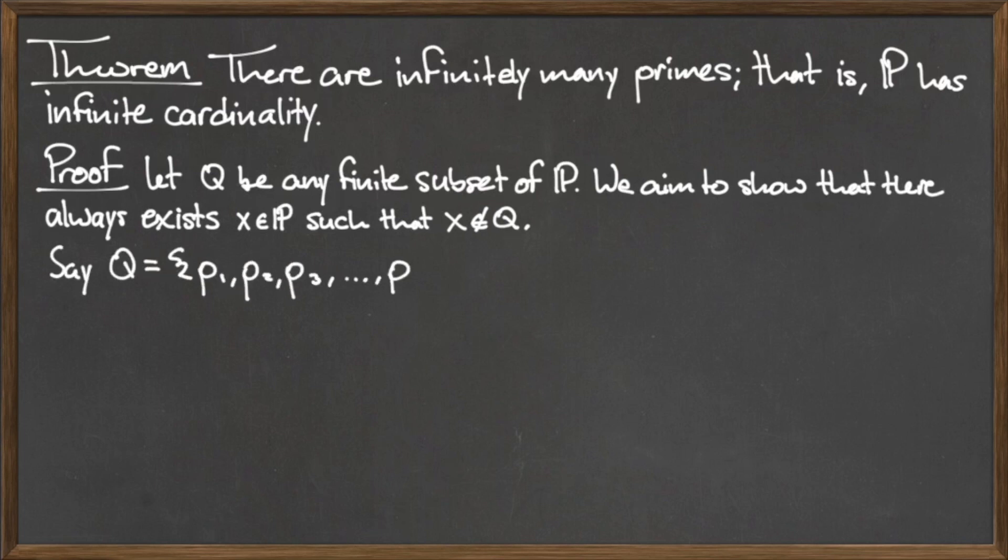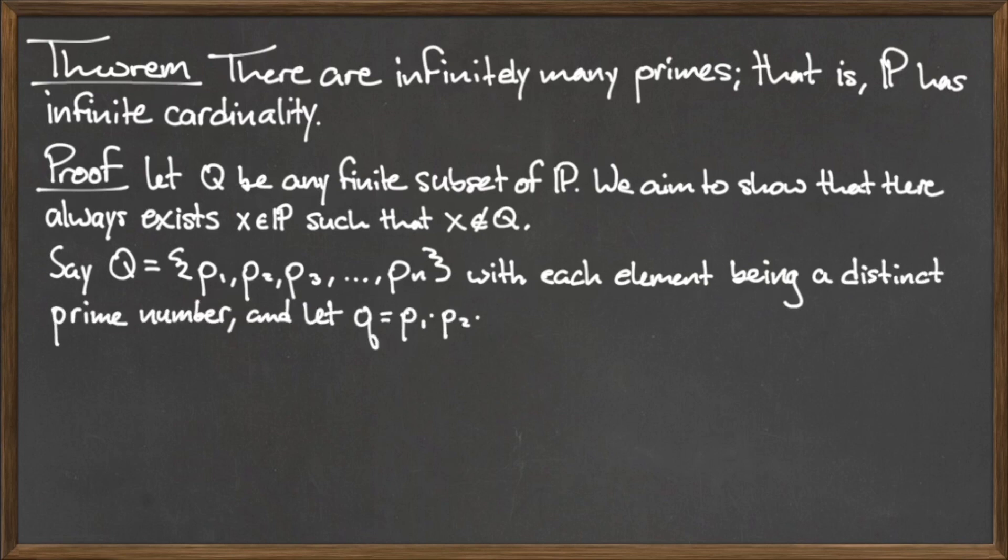Since Q is finite, suppose that it has n elements: P1, P2, P3, all the way up to Pn, with each of these Ps being a distinct prime number.